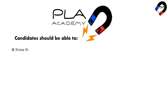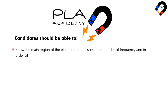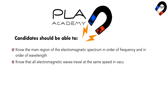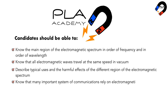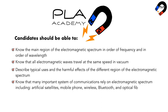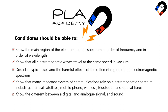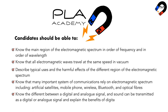Candidates should be able to know the main regions of the electromagnetic spectrum in order of frequency and wavelength. Know that all electromagnetic waves travel at the same speed in vacuum. Describe typical uses and the harmful effects of the different regions of the electromagnetic spectrum. Know that many important systems of communications rely on the electromagnetic spectrum, including artificial satellites, mobile phones, wireless, Bluetooth, and optical fibers. Know the difference between digital and analog signals, and explain the benefits of digital.